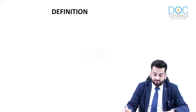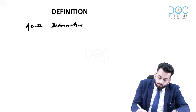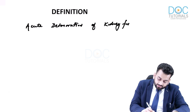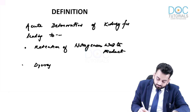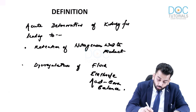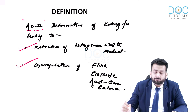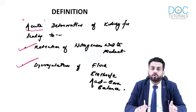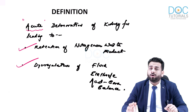Let us define acute kidney injury. AKI is defined as acute deterioration of kidney function leading to retention of nitrogenous waste products and dysregulation of fluid, electrolyte, and acid-base balance. This definition is nicely written but is not sufficiently concise or quantified.